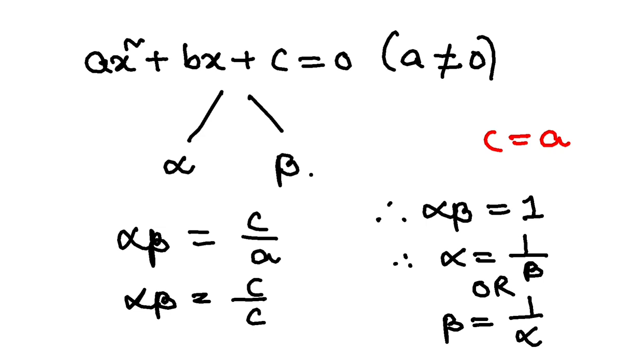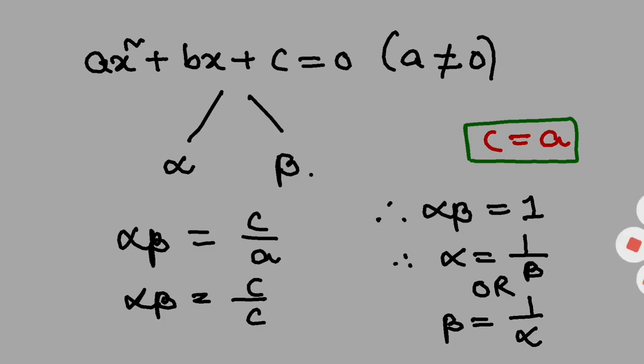Isn't it? Very simple, very conceptual. The condition under which the roots of a quadratic equation are reciprocal to each other is c is equal to a. Alright. In the next video, we shall be discussing one more question from the chapter.